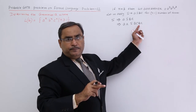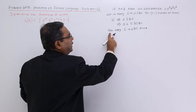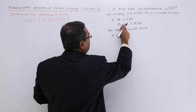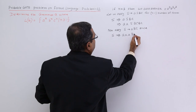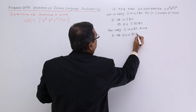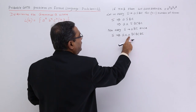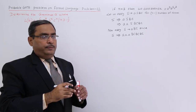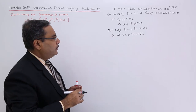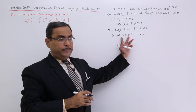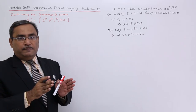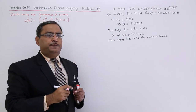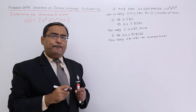Now apply S → ABC once. So I shall get A, A, A already there, and then A, A, A, BC, BC, BC — in this way I have got it. Now I shall do something new, because you see the A's have got clubbed, but B and C are not adjacent. B's are not adjacent, C's are not adjacent. So now apply CB → BC; this particular production rule we shall apply for multiple number of times.